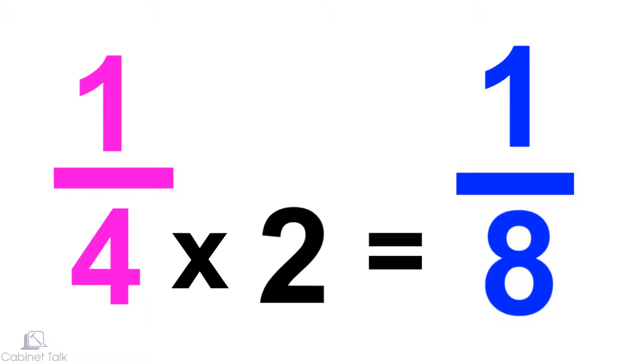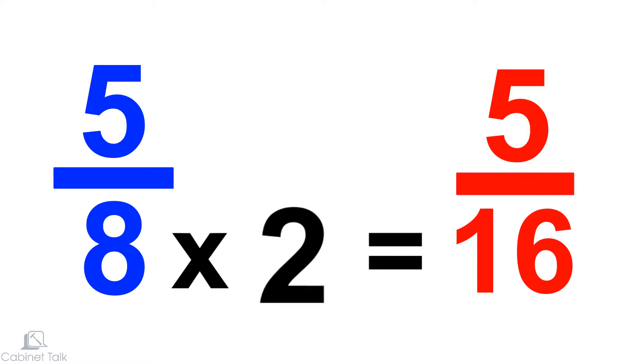Let's see another example. To find half of five-eighths, multiply eight by two. This gives us five-sixteenths.